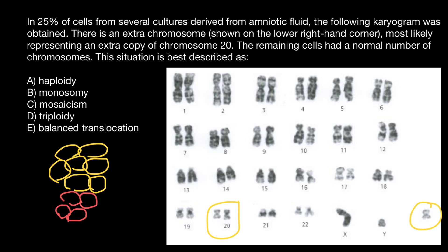So mosaicism is our correct answer. But let's also define the other terms. Triploidy would be a situation where instead of two chromosomes for each pair, we have three chromosomes. People do not tolerate such genetic disorders, but plants can be triploid, meaning having three sets of chromosomes, or tetraploid, pentaploid, hexaploid, and so on. So triploidy means three full sets of chromosomes.